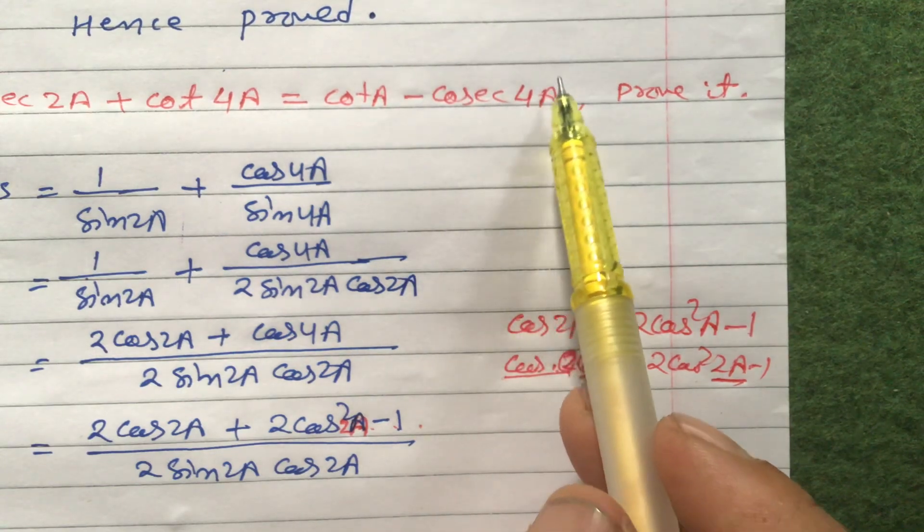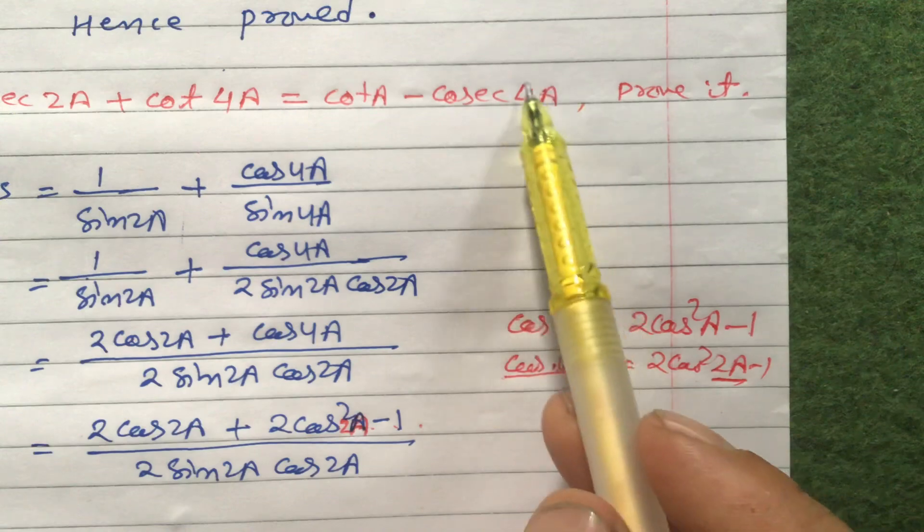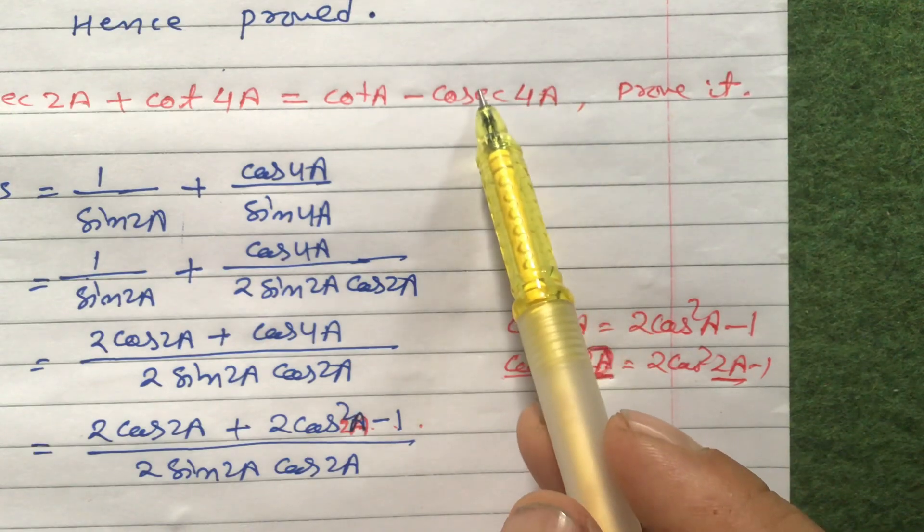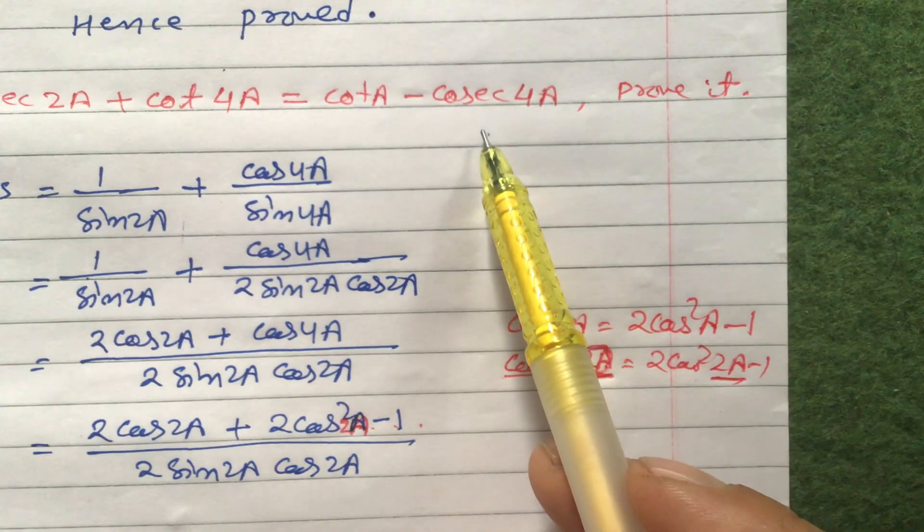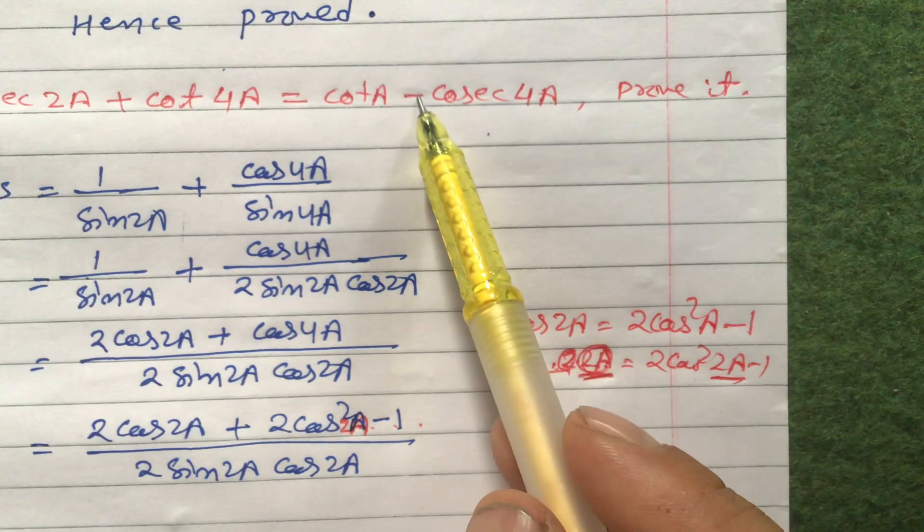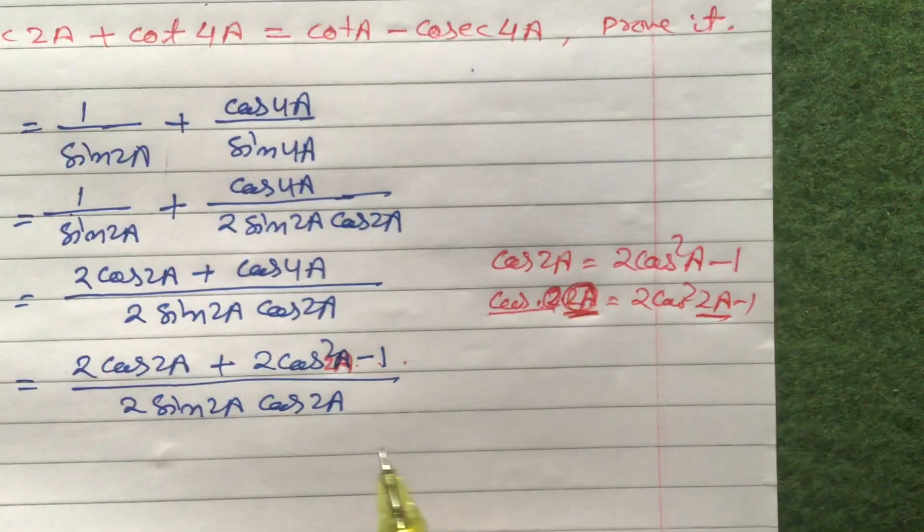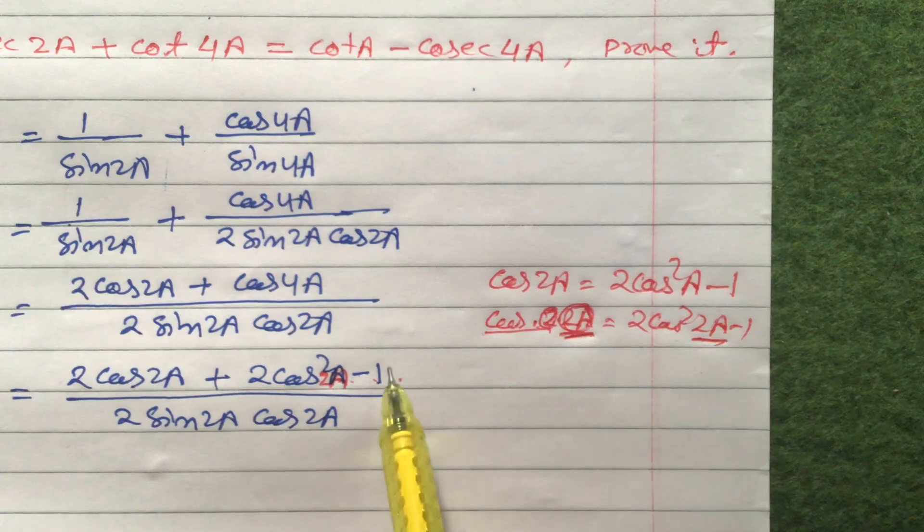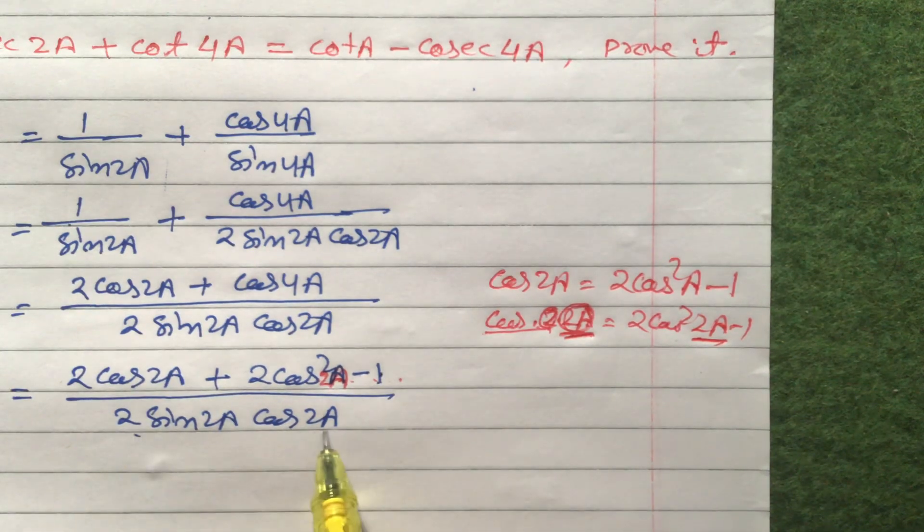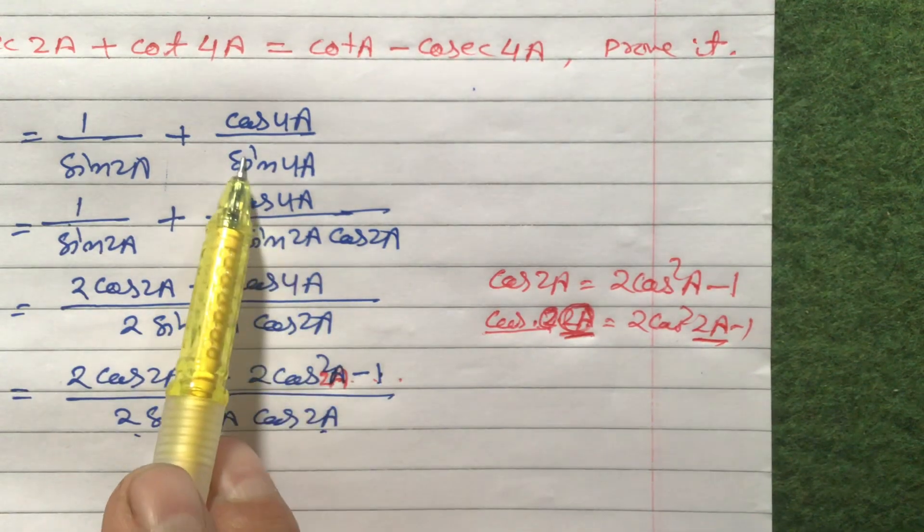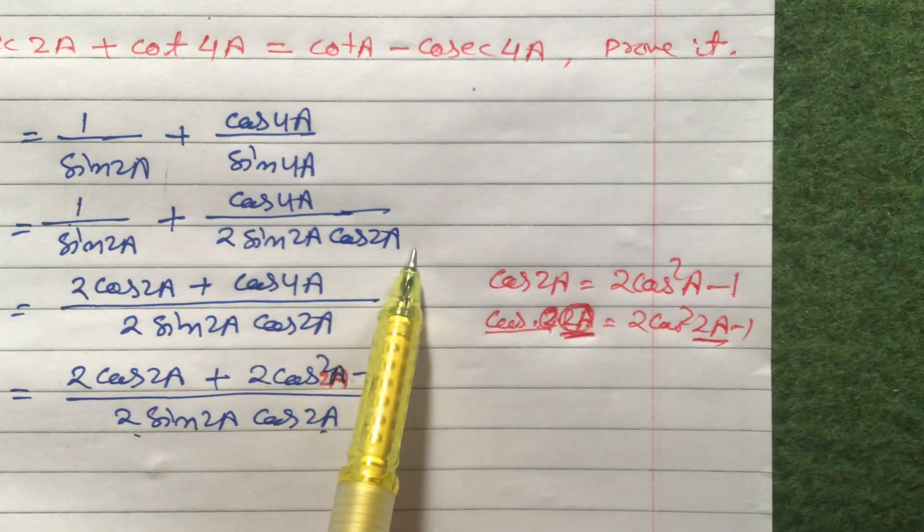So always we will try to get this higher angle first of all. Cot 4a means 1 by sin 4a. Now how to get 1 by sin 4a? See, minus also there is. So look at here. Minus 1 is here. So if you break the terms here, 1 by this is sin 4a. Already we have applied the formula: sin 4a means 2 sin 2a cos 2a.